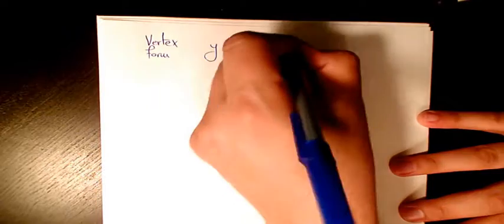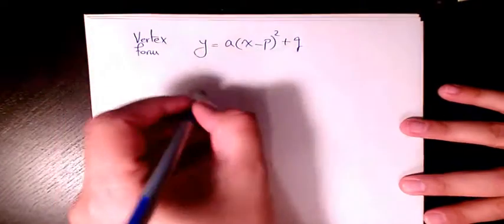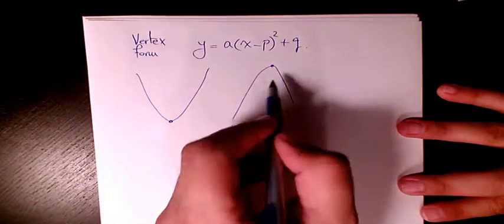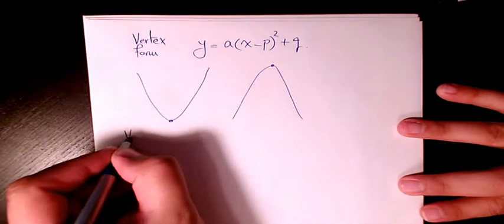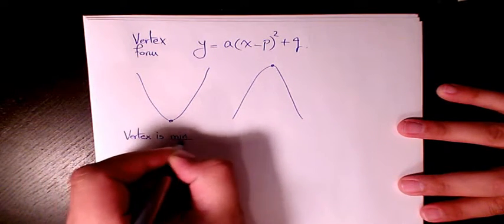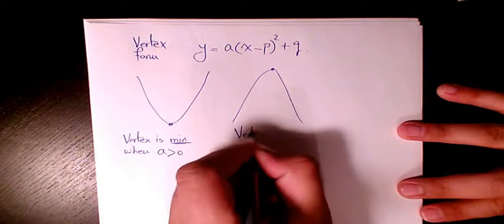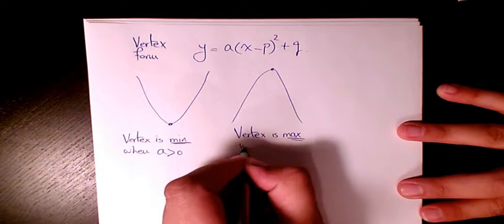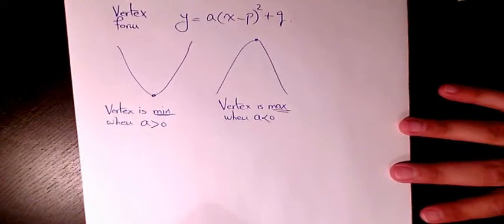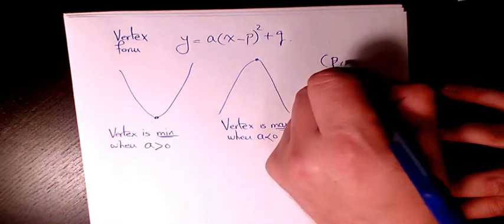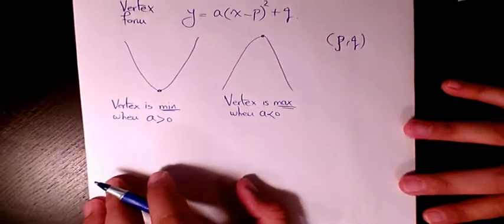The last one is vertex form: y equals a times (x minus p) squared plus q. The vertex shows the minimum or maximum point of the parabola. If the parabola is opening up, we are dealing with a minimum; if it's opening down, we are dealing with a maximum. The exact location of the vertex is given by the point (p, q).